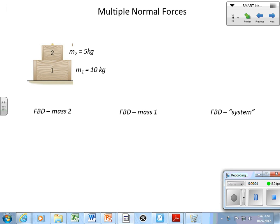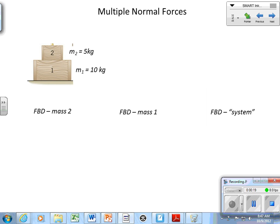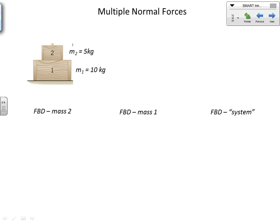We're talking about the multiple normal forces concept, but more importantly we're formalizing this idea of what we call force pairs. When we deal with systems of multiple masses, a couple of things are important: we can look at free body diagrams for parts of the system or the system as a whole, and we need to identify these things called force pairs. So let's do a free body diagram for m2.